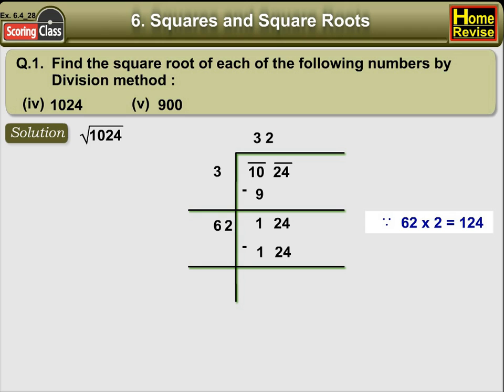By this, we get our remainder 0. Since the remainder is 0, therefore, square root of 1024 is equal to 32.